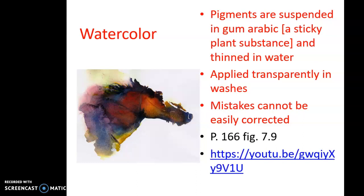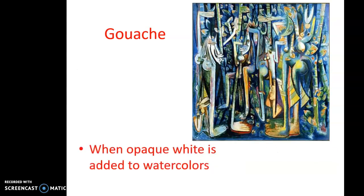There's also a video clip here — I believe it shows paint being made. I wouldn't suggest watching the whole thing, but it's interesting to see how paint is made. Gouache is when opaque white is added to watercolors, giving it a chalky, flat color. So white added to watercolor is called gouache. Page 167, figure 7-10 is an example of a gouache painting in your text.